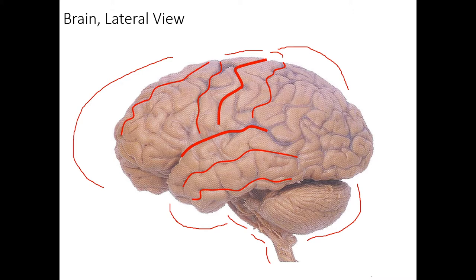Now let's move to the frontal cortex, where we again see two primary sulci dividing it up. We have a superior frontal sulcus and an inferior frontal sulcus. So because we have two sulci, we have three gyri, and for that reason we can name them the superior frontal gyrus, the middle frontal gyrus, and the inferior frontal gyrus.